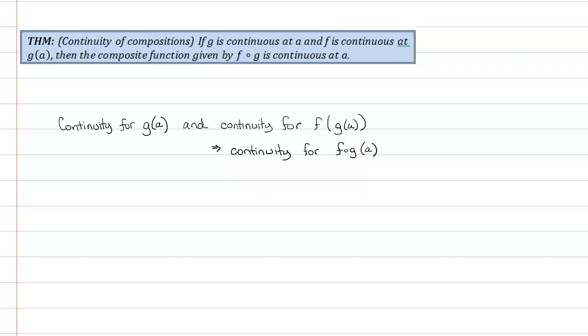Summarized in better terms, you have continuity for g at a, and continuity for f evaluated at g at a implies continuity for the composition of f and g at a. That's actually sort of redundant, because if you know anything about compositions, you know that f composed with g at a is symbolically written as f of g of a. So it's almost saying continuity at f of g of a implies continuity at f of g of a. But we'll prove it anyway, because it's a common theorem in calculus textbooks.